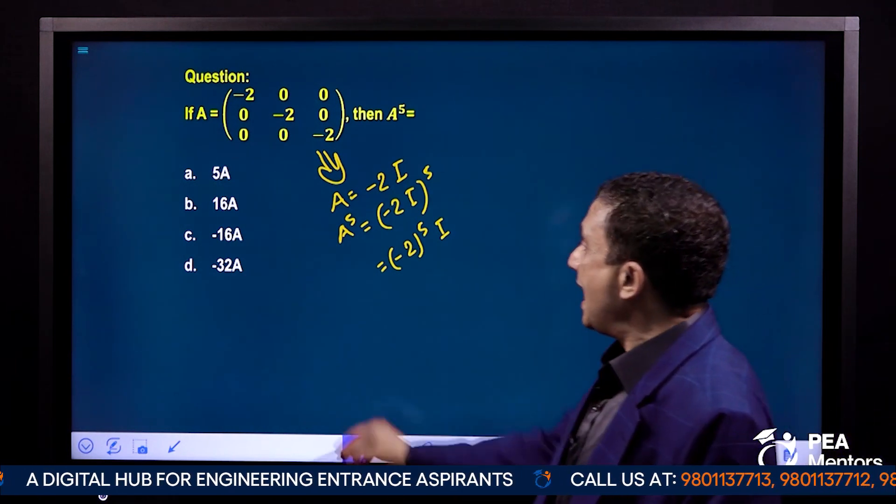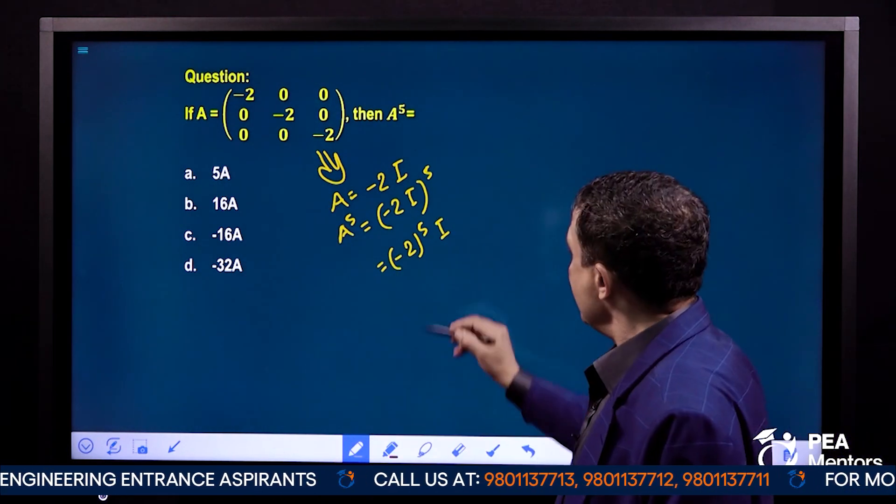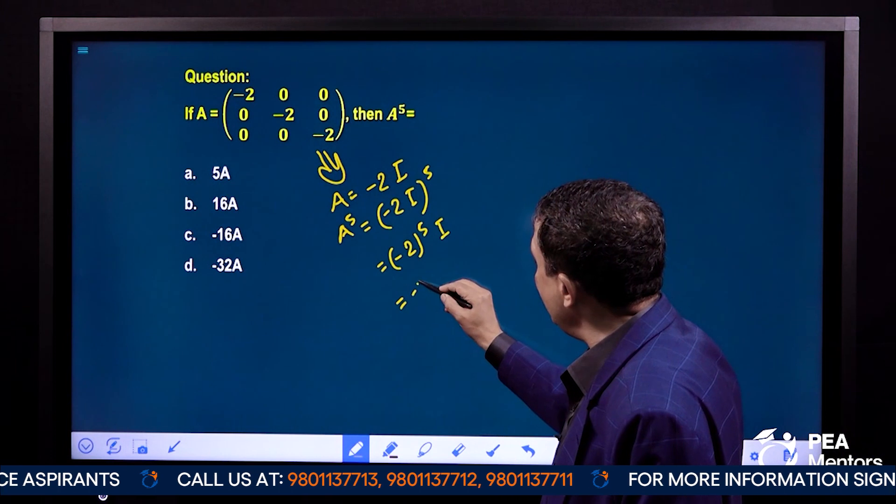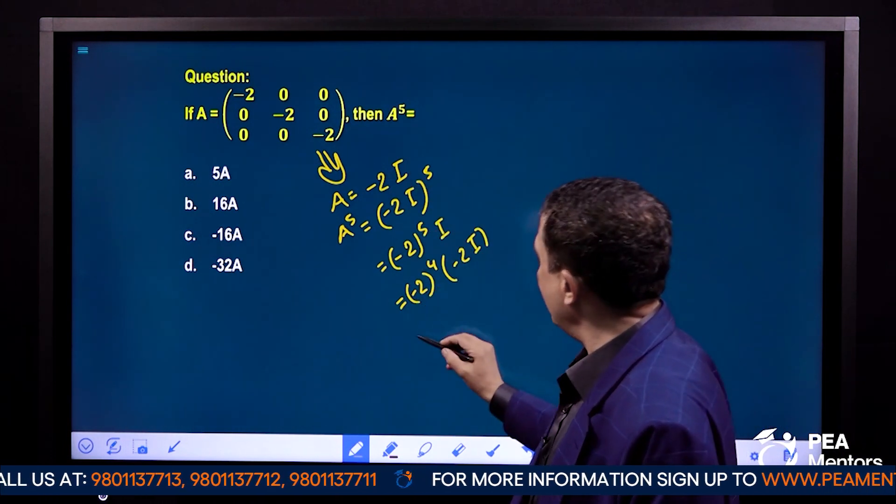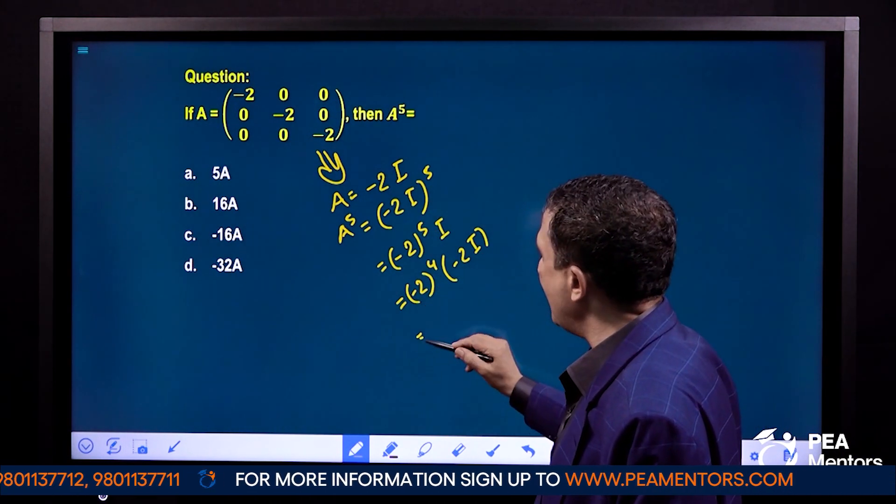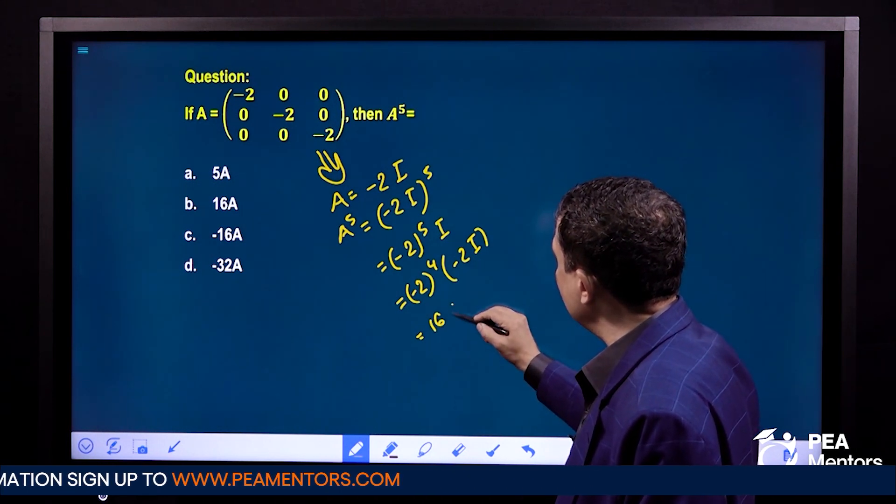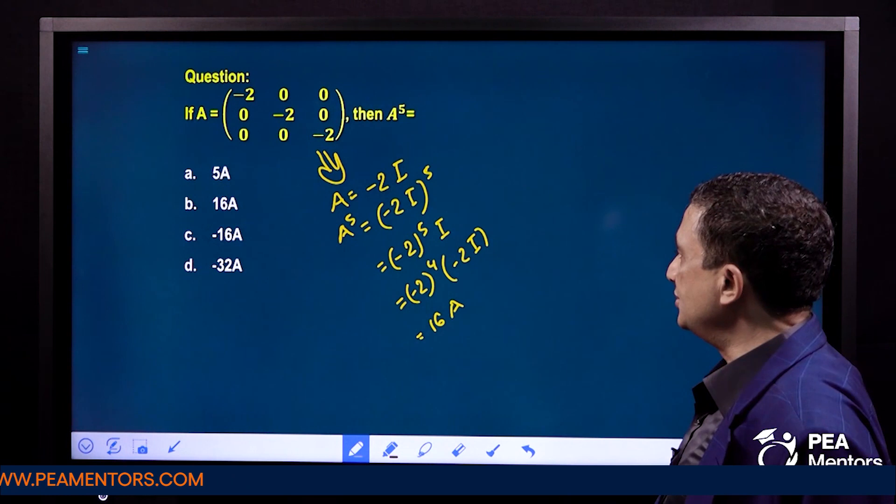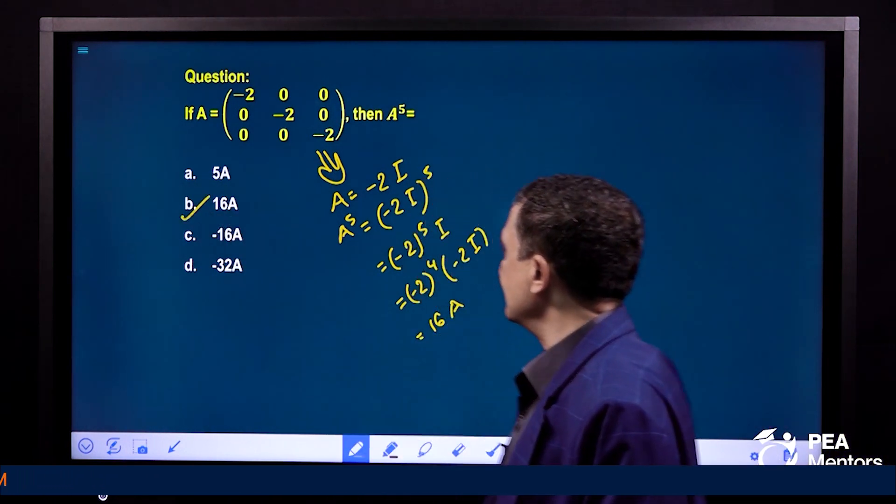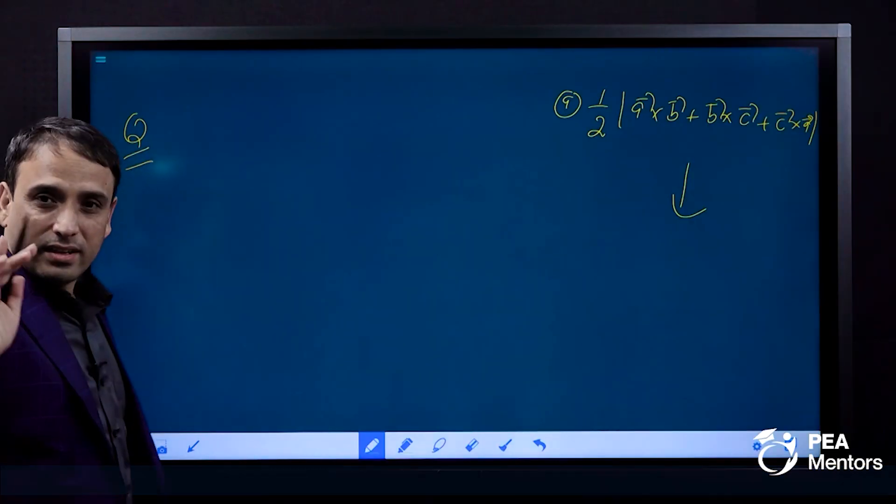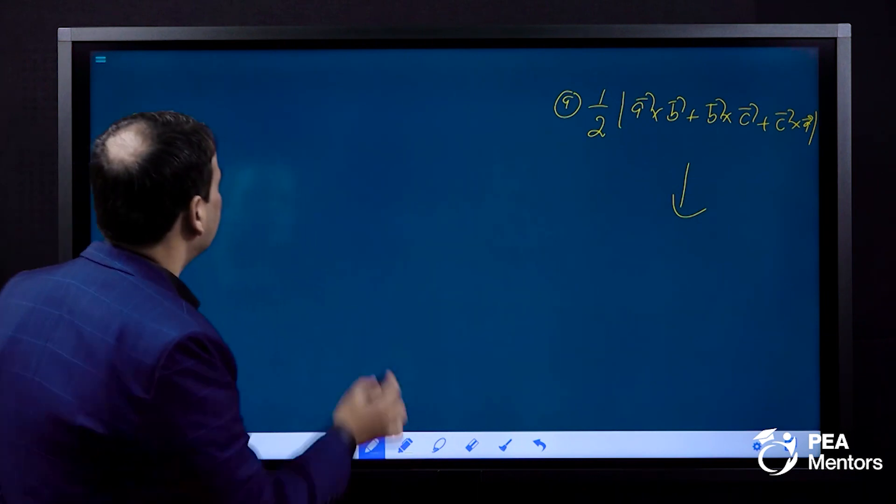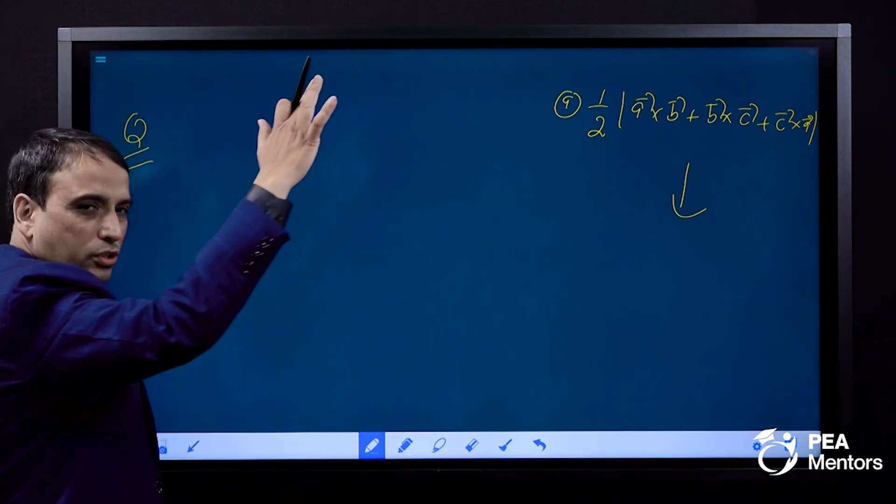But note that our answer is in terms of A. If it is -2 to the power 5 times I, we have to use -2 to the power 5 times I. How much is it? -2I. What is the answer? B.